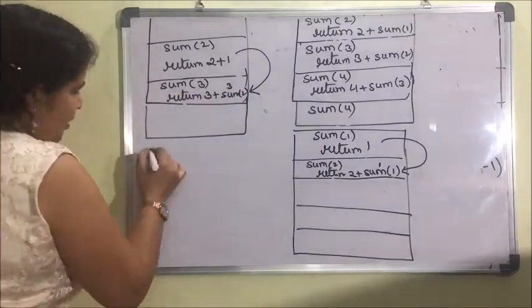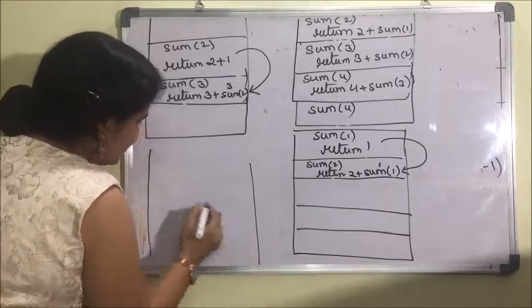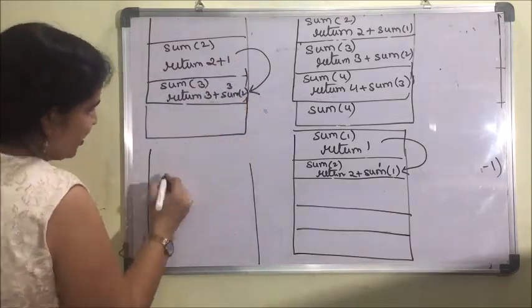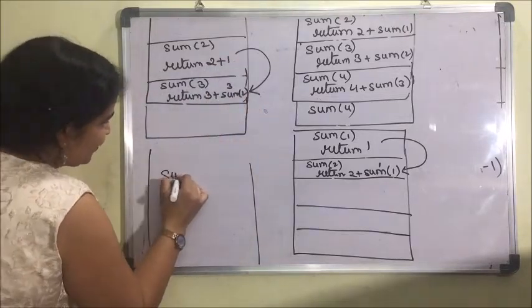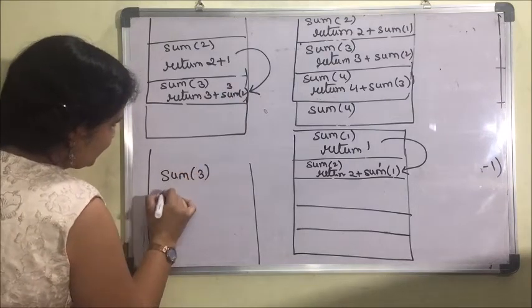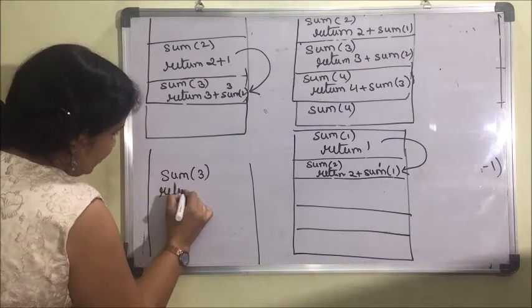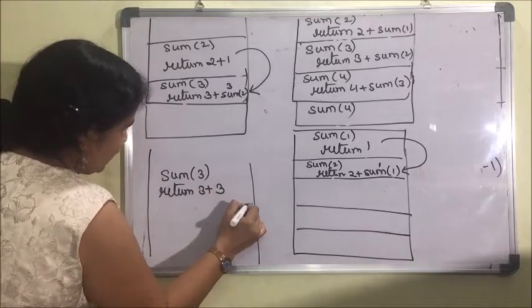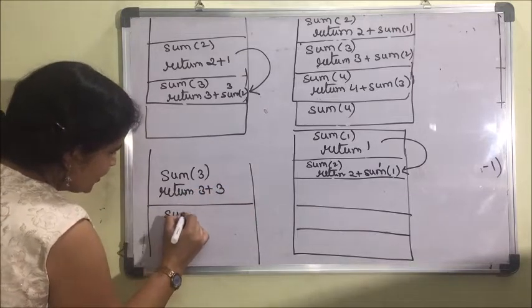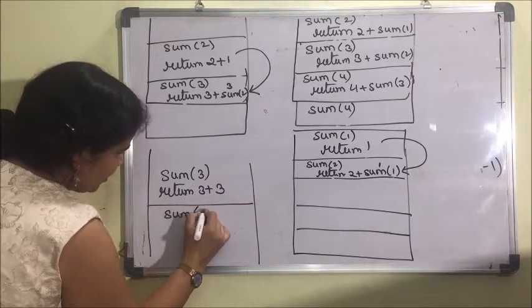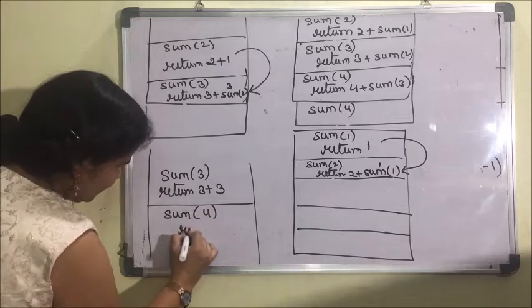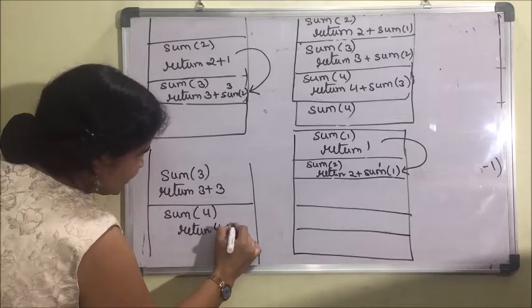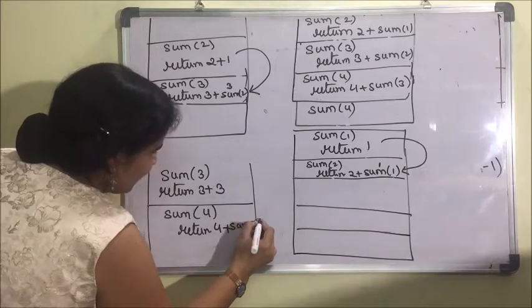All frames remain as they are. This passes its value to sum(3), which now returns 3 plus 3. Below it was sum(4) returning 4 plus sum(3).